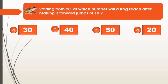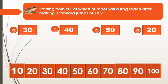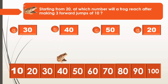We will tick mark the correct option. Let's find out the answer. Here we have a counting strip counting by 10s. The frog starts from 20 — he is sitting at 20. In the first jump, he jumped by 10 and will reach 30. From 30 he makes a second jump and reaches 40. Then he makes a third jump and reaches 50. He started from 20 and reached 50, jumping by 10s, making 3 jumps.